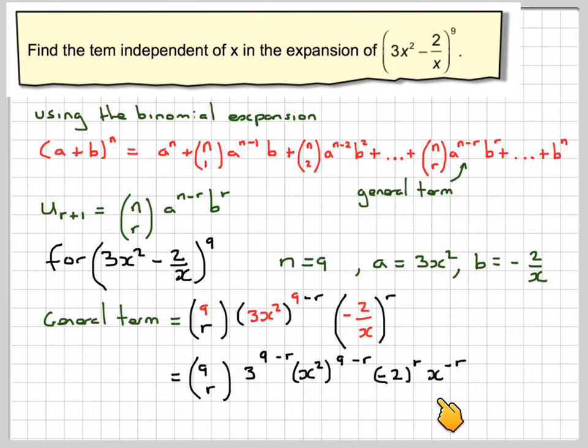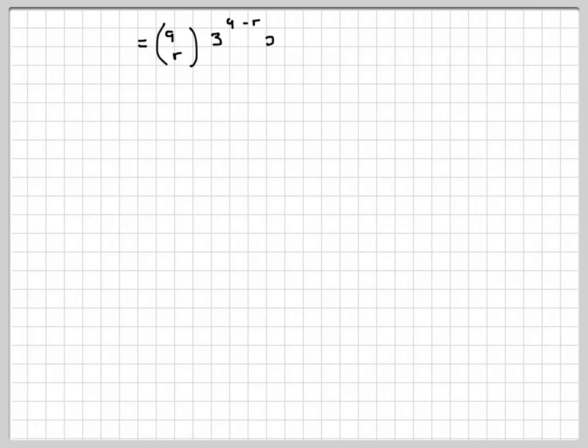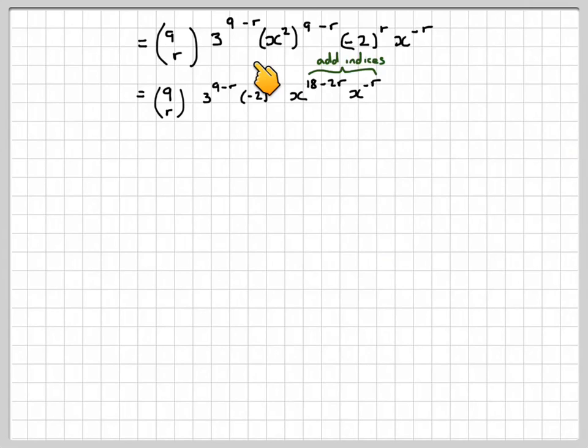Grouping the x terms together, we'll get 9cr, 3 to the 9 minus r, minus 2 to the r, and we're going to have x. Now multiplying this power out, we've got x to the 18 minus 2r, 2 times 9, 2 times r, times x to the minus r. And here we have to add together the indices.